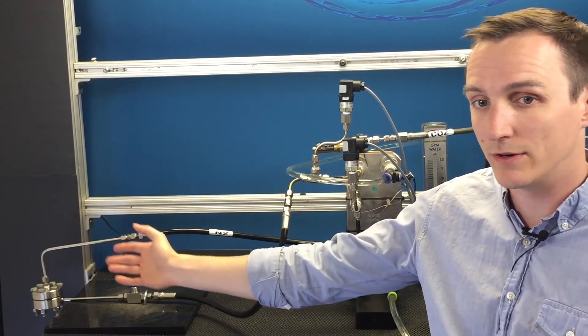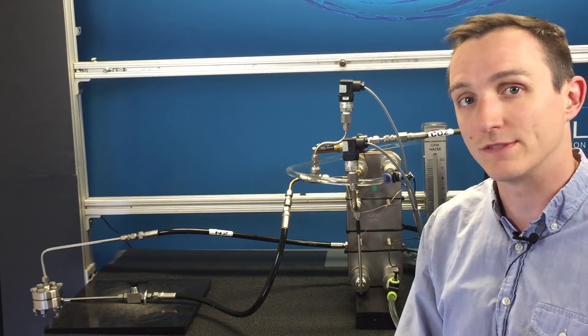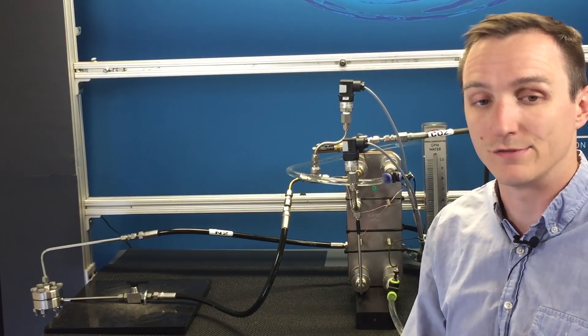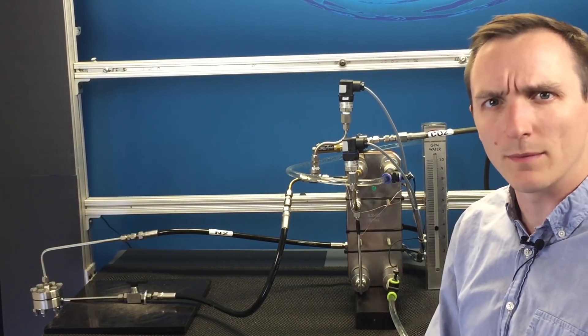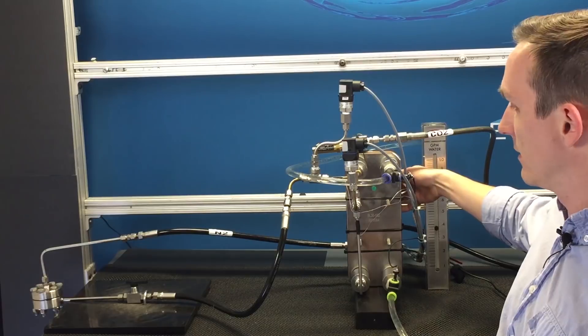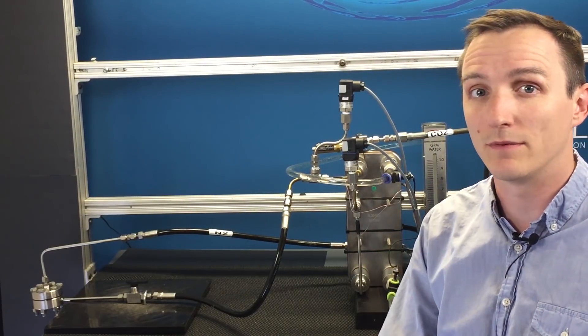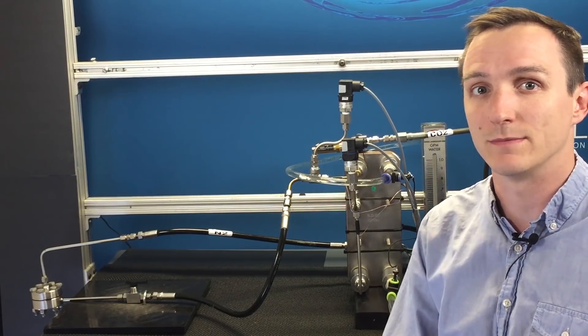Here we have the Equilibar dome loaded back pressure regulator which will control the saturation pressure of the CO2 in the evaporator providing isothermality. The Equilibar is controlled by a QV pilot regulator which is in the back and will control the supply of nitrogen to the dome of the Equilibar. Let's go run the system and see what happens.